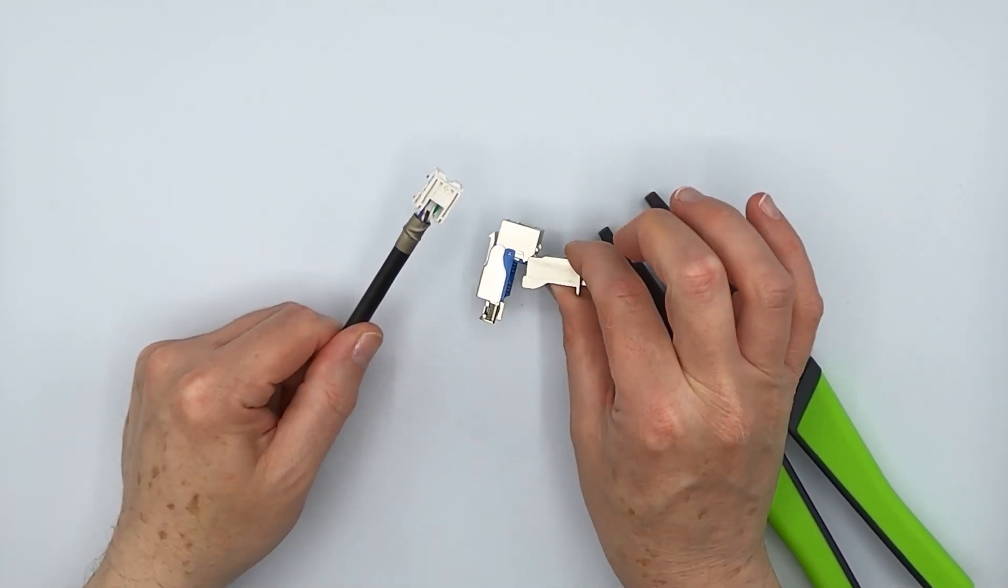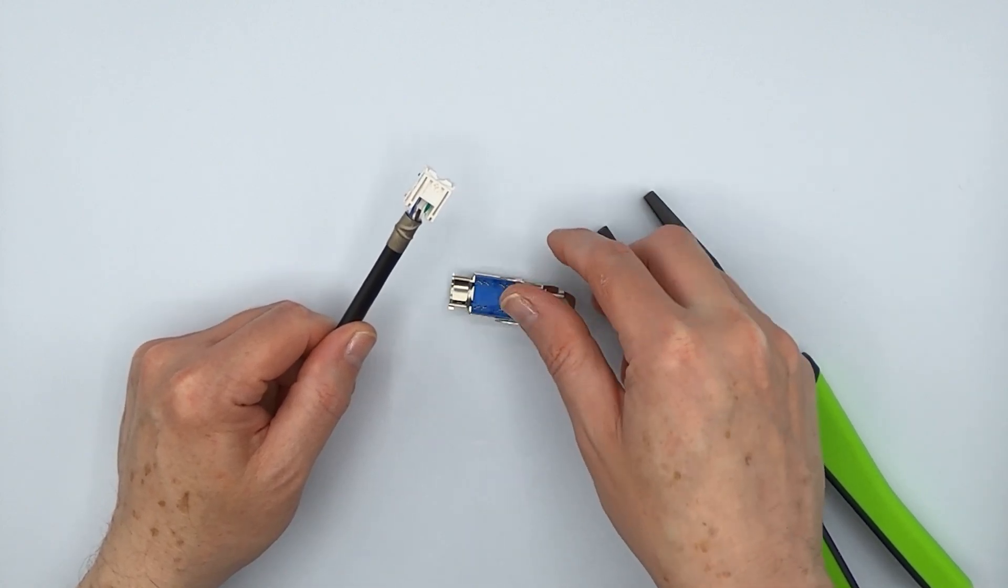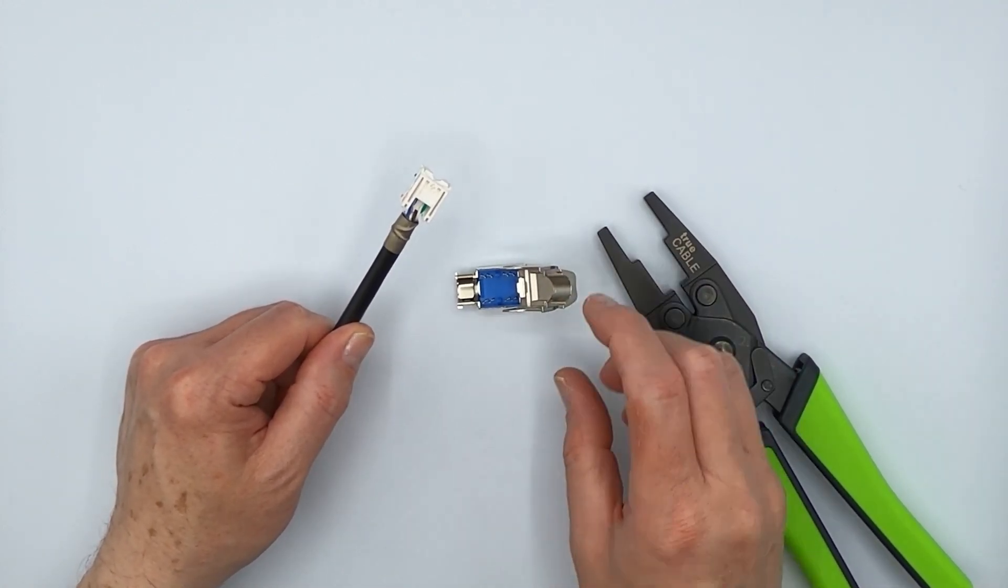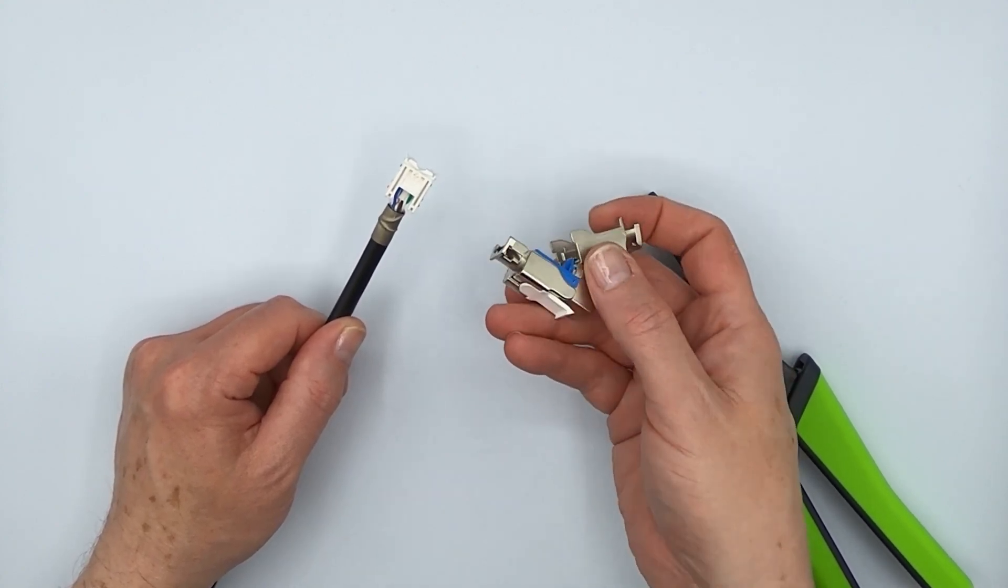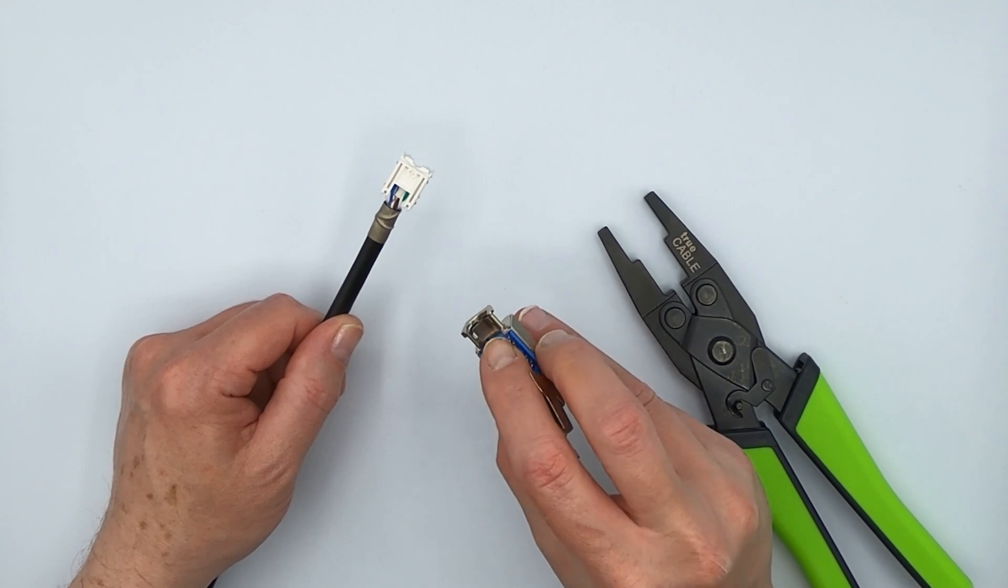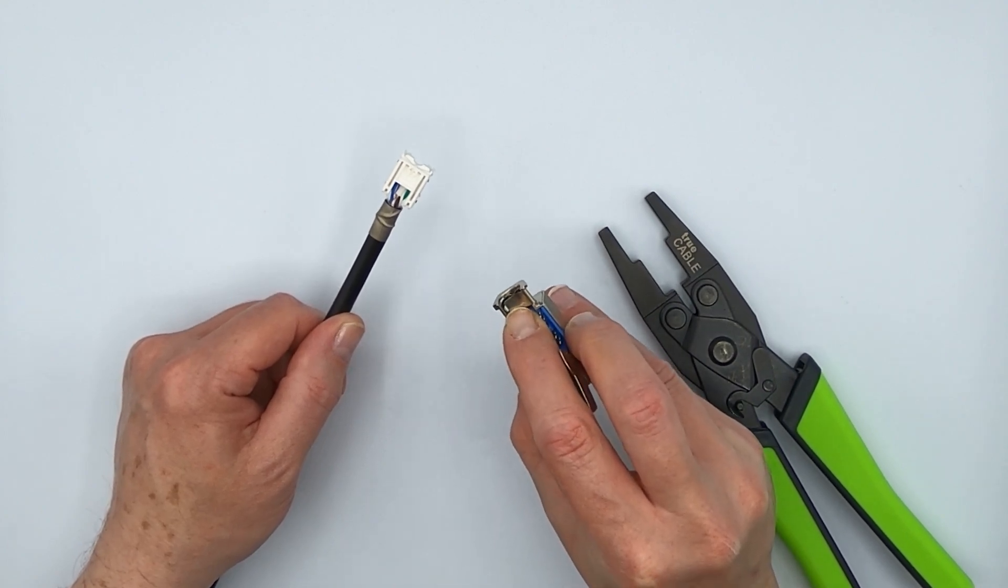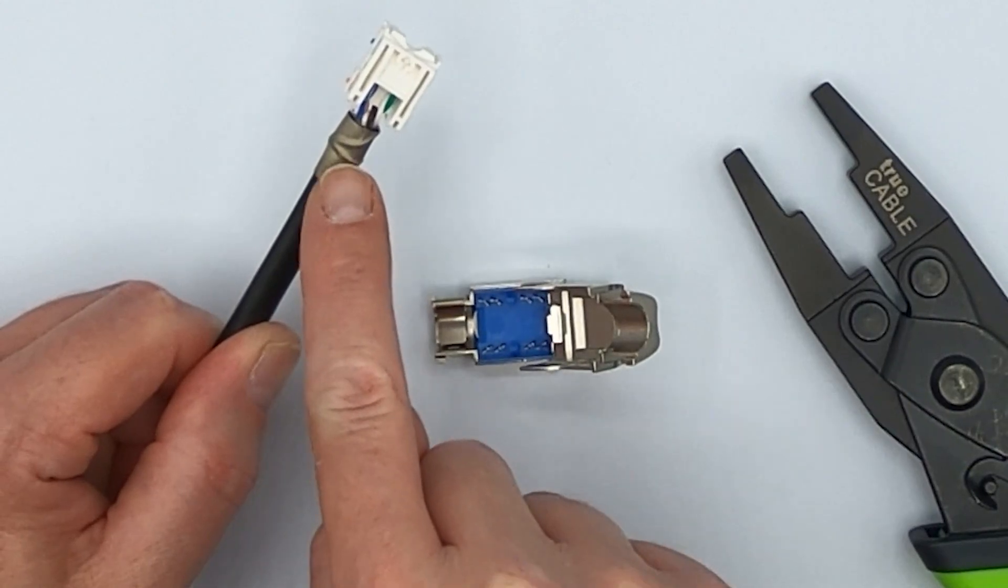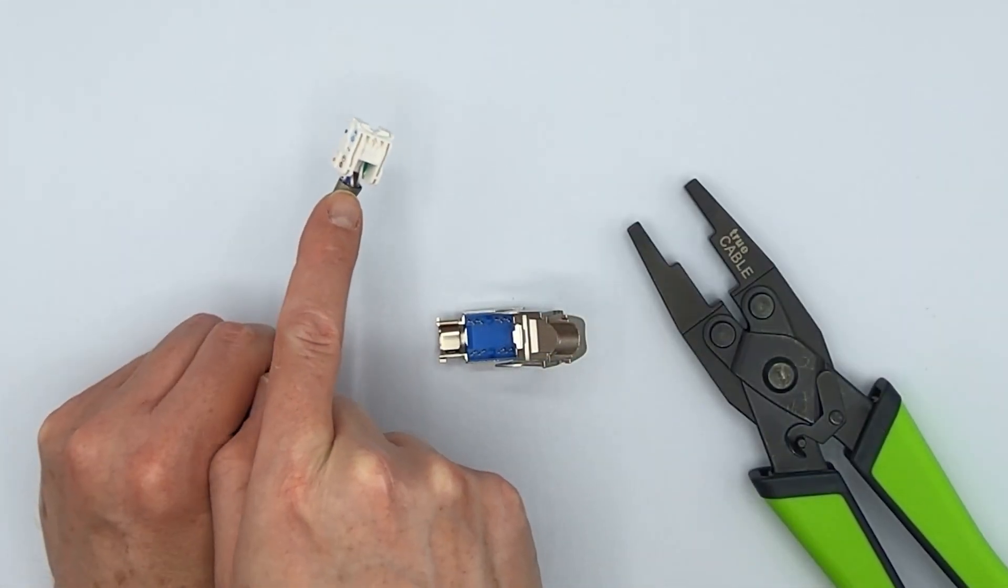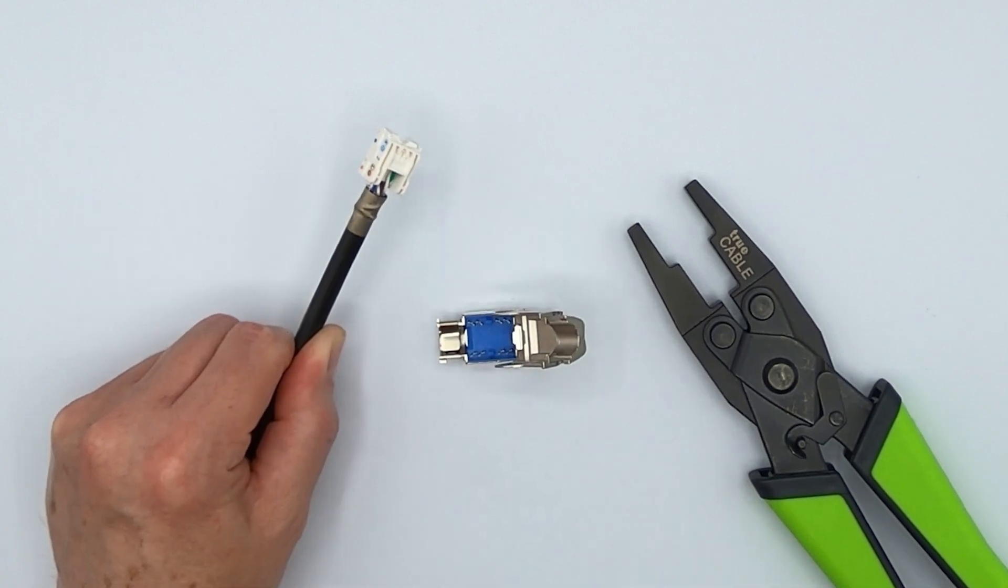Okay, so here we have a shielded toolless keystone jack. And this jack is composed of a nickel, basically a nickel plated zinc alloy. And it's got a grounding spring that's found right here. And that grounding spring needs to make contact with that copper fabric. So we take the copper fabric and we put it all the way to the edge of the cable jacket, like so.